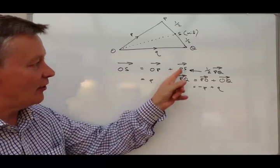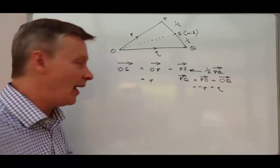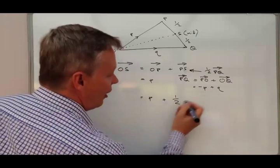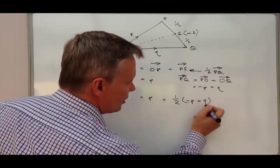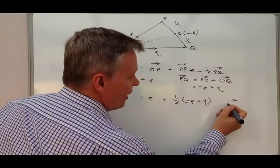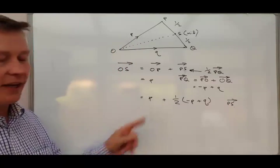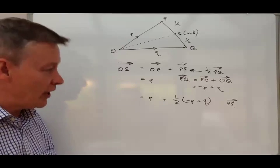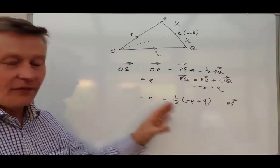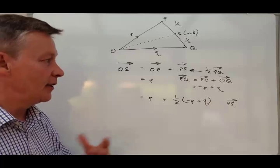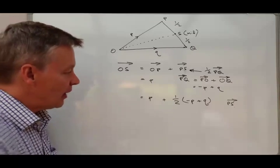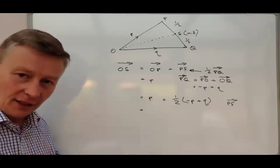As we said before, to go vector PS we only need a half of that. So I'm going to write this out as P plus a half of minus P plus Q. This bit here is vector PS, and this bit here is vector OP. Generally speaking, that would be good enough and would gain you quite a few marks, but you need to be able to tidy this up a little bit.